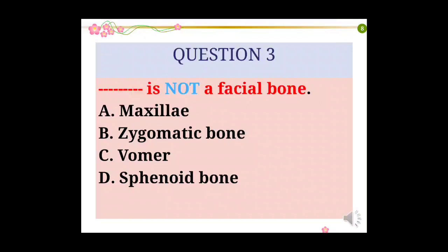Question number 3: Dash is not a facial bone. Options: Maxilla, zygomatic bone, vomer, sphenoid bone.